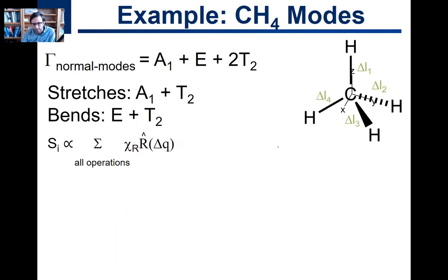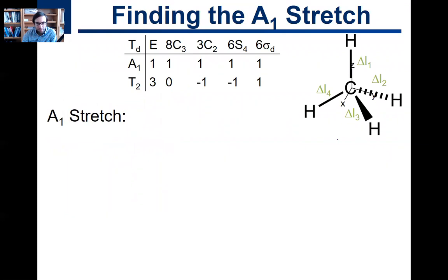So we're going to set up, let's do stretches first. We're going to set up our four symmetry coordinates. Those are going to be changes in bond lengths or stretches. Label them ΔL₁ through ΔL₄. And we pull up the part of the Td character table. All I really need here is A₁ and T₂ because those are the only stretches that are involved.